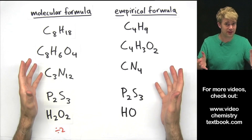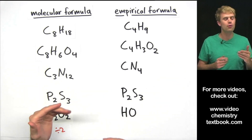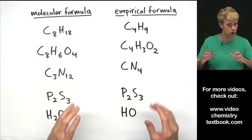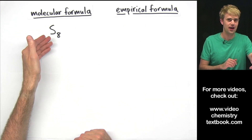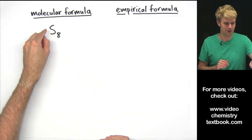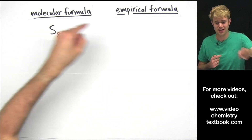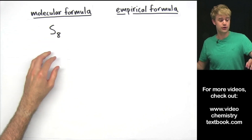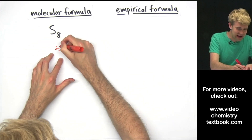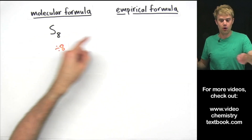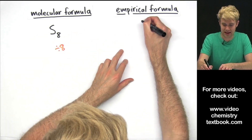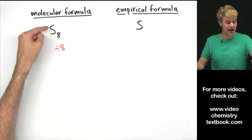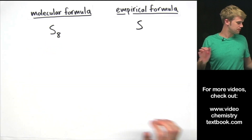Now if you feel you've really gotten the hang of this, you still might want to watch a couple more because I'm going to talk about a few examples that sometimes trip people up — it can be a little bit tricky. S8: in this formula we just have one type of element, sulfur, but we still go through the same process to write the empirical formula. Can we divide this number by something that will reduce it even more? Yes — 8 is divisible by 8, so our empirical formula is just S. 8 divided by 8 is 1, so the empirical formula for S8 is just S.